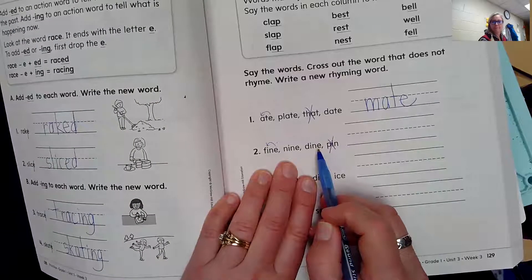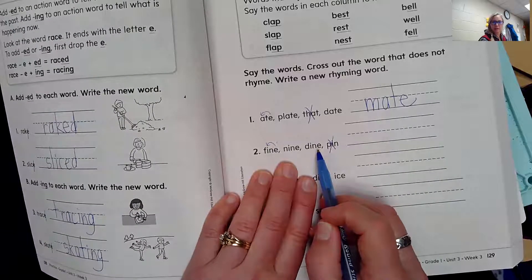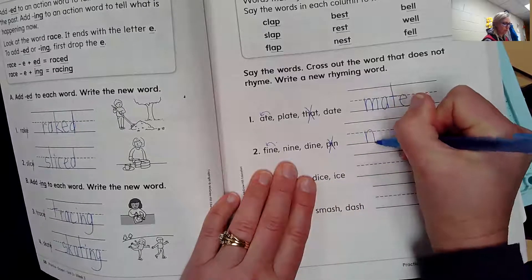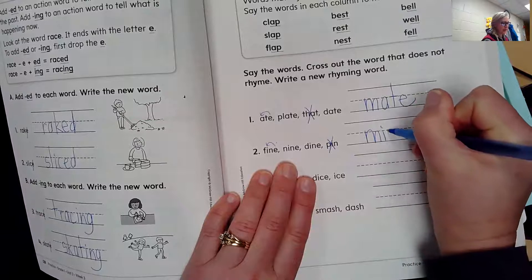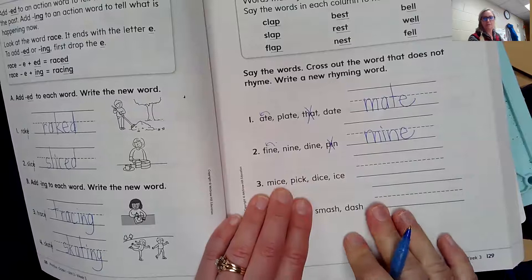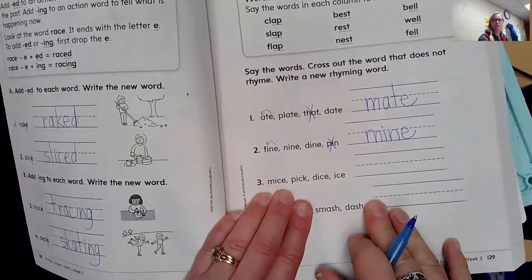We need a new word that rhymes with fine, nine, dine. How about we put M at the beginning again? If we put M at the beginning of 'ine', we have the word mine. That is mine. You can even make a make-believe word. They can still rhyme, even if they're not real.